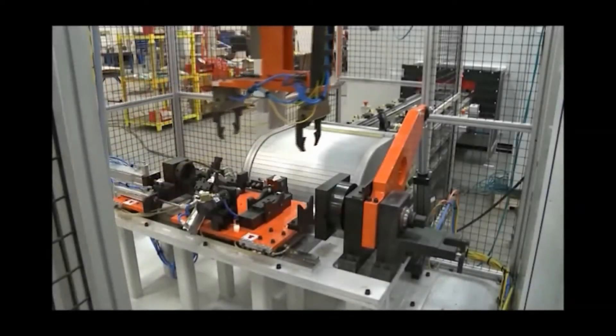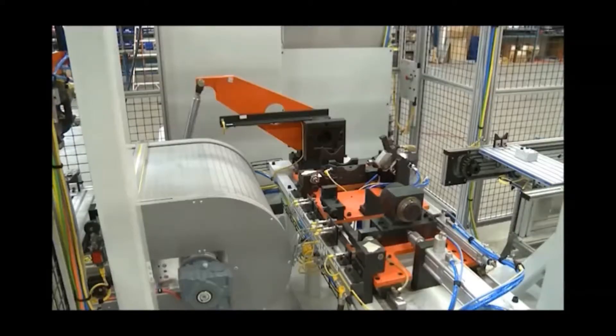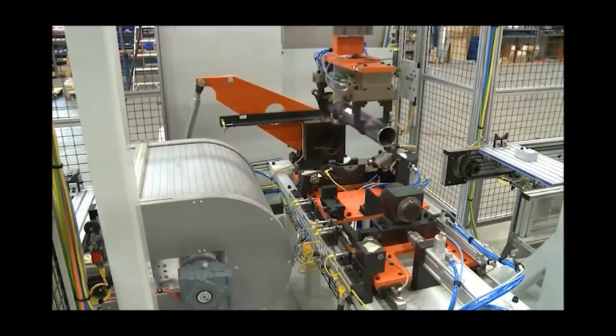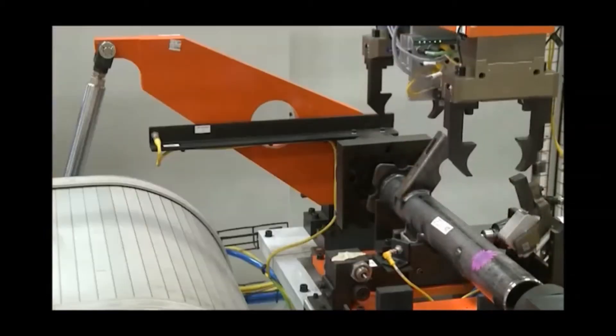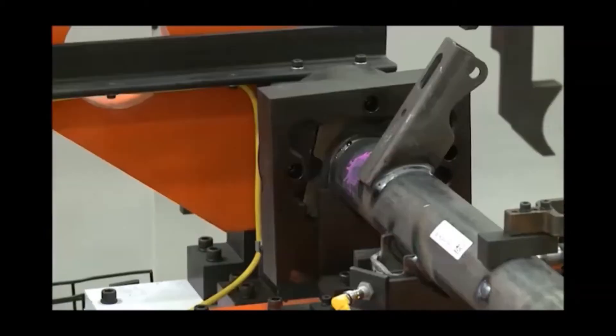The next operation in this line is a torque test station. The given torque value is applied to every axle to verify the bond between the brake flange and the axle tube.